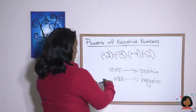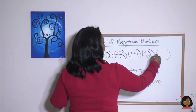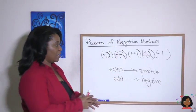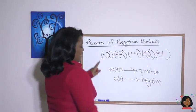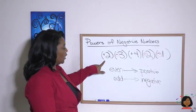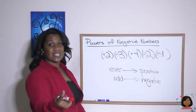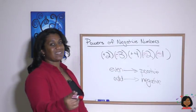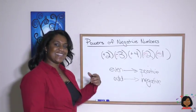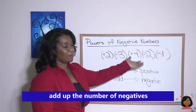Let's try adding one more number to this — times negative 1. Now how many negatives do we have? We have three, which is an odd number, so our answer is going to be negative. Let's try it: 2 times negative 3 is negative 6; negative 6 times 4 is negative 24; negative 24 times negative 2 is positive 48; positive 48 times negative 1 is negative 48. It works!